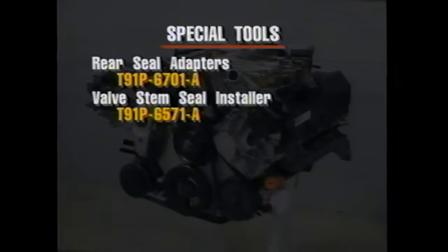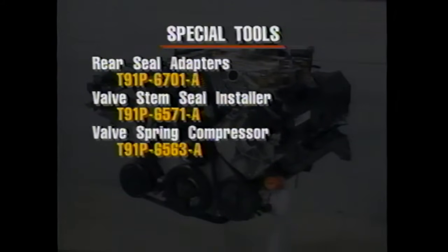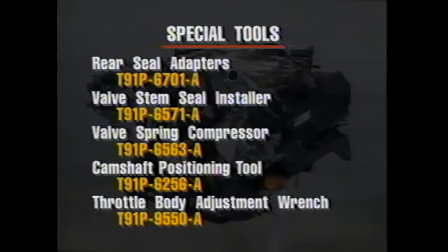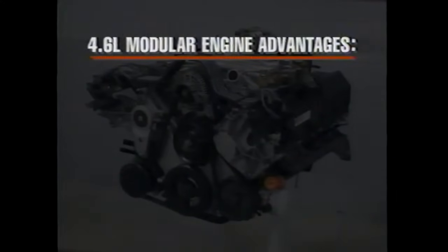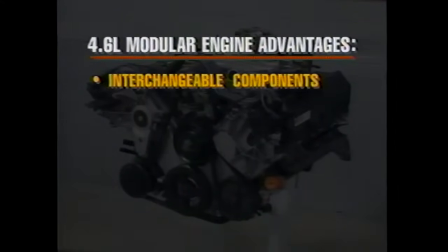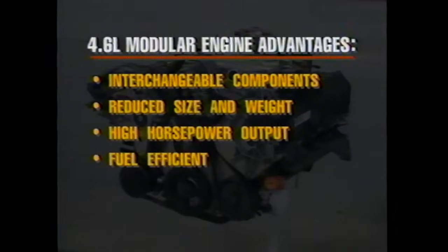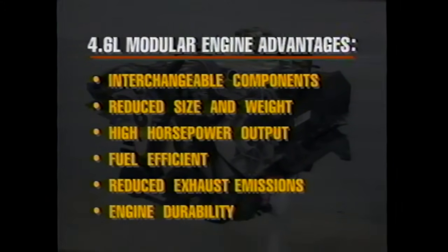The special tools needed to service the 4.6 liter engine are: rear seal adapter, tool number T91P-6701-A; valve stem seal installer, tool number T91P-6571-A; valve spring compressor, tool number T91P-6701-A; and throttle body adjustment wrench, tool number T91P-9550-A. The 4.6 liter modular engine has been designed to offer many advantages: the use of interchangeable engine components, a reduction in engine size and weight, a high horsepower output rating, excellent fuel efficiency, a reduction in exhaust emissions, and improved durability.